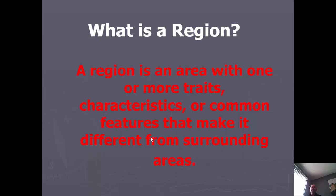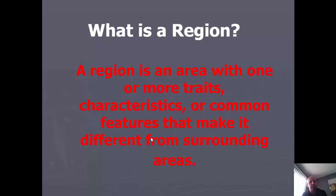Regions — what are they? We start with the formal definition. A region is an area that has one or more traits, characteristics, or some common feature that makes it different from surrounding areas. We already know what a place is — that's a point on the map. What we can do is look at a series of places, see if they have anything in common, and draw a circle around those places. In doing so, we create a region defined by some common feature, characteristic, or activity.